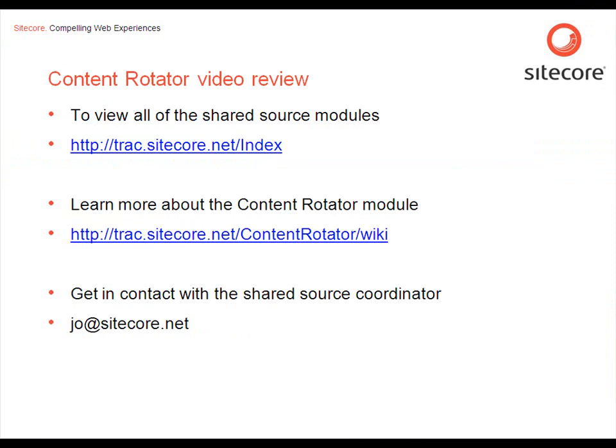If you want to learn more about the Shared Source modules available from the Sitecore Shared Source Library, you can visit the Index page where you can see the five latest added modules, as well as the entire list under different categories. View the Project Room for each module, where you can read the documentation and download the package as well as the source. You can visit the Project Room for the Content Rotator using the direct link, which also contains the package you can download. If you want to contact the Shared Source Coordinator, you can do so by using the provided email address.